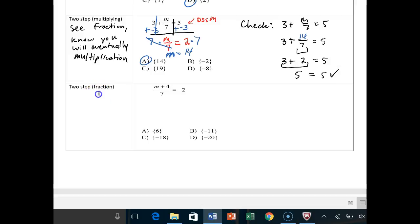Two-step fraction again. Since we see that fraction, we need to multiply. So your first step on this is going to go ahead and say times 7 on both sides. Those cancel out. This whole thing gets dropped down. So M plus 4 is equal to negative 14. This was a DSN, different signs negative.